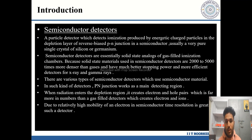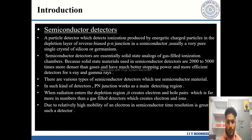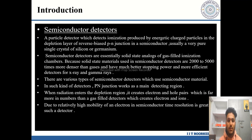Because semiconductor detectors use semiconductor materials, they are more dense, and consequently have more stopping power and higher efficiency for detection of X-rays and gamma rays. In such detectors, the P-N junction works as the main detecting region. When radiation enters the depletion region, it creates electron-hole pairs, which are far more numerous than the electron-ion pairs created in gas-filled detectors.